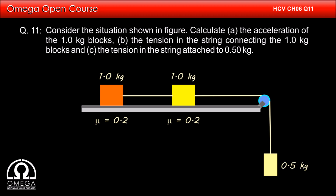Consider the situation shown in the figure. Calculate: (a) the acceleration of the 1 kg blocks, (b) the tension in the string connecting the 1 kg blocks, and (c) the tension in the string attached to the 0.5 kg block. Let the tension in the string joining the 1 kg block and 0.5 kg block be T1, and the tension in the string joining both 1 kg blocks be T2. Also, assume that the entire system moves with acceleration a.